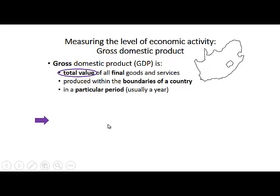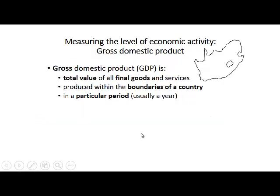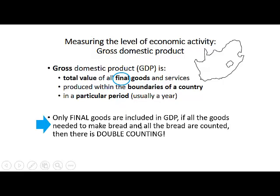It's also important that we look at the total value of all final goods and services. We have to measure it somehow, and we use prices to measure the value of goods and services — prices express the value of the goods. We only consider final goods and services. For example, if we added everything used to make bread, like the flour, yeast, and electricity, and then added the value of the bread, we would be doing double counting.